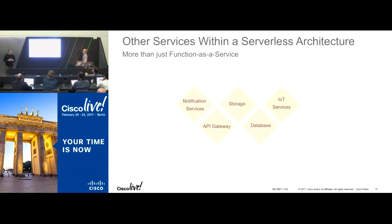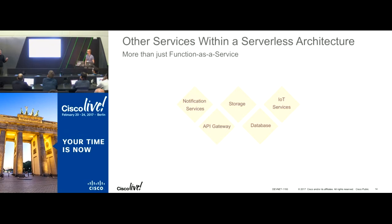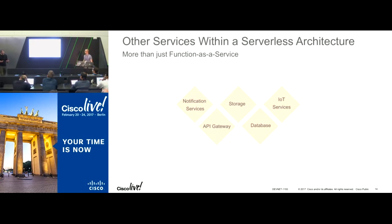When Amazon came out with Lambda, I believe it was more of a reaction to things happening in the market. Around 2010, a couple of companies started offering something called backend as a service. One of those was Parse and the other was Firebase. Parse was purchased by Facebook and subsequently shut down last year. Firebase is still being used by Google. The idea of these backend-as-a-service platforms was that a lot of people wanted to develop iPhone and Android applications but didn't want to bother with the backend, and they didn't want to manage the server.